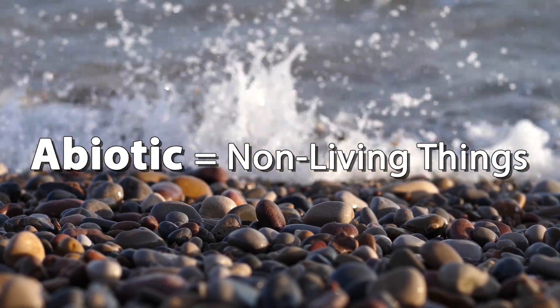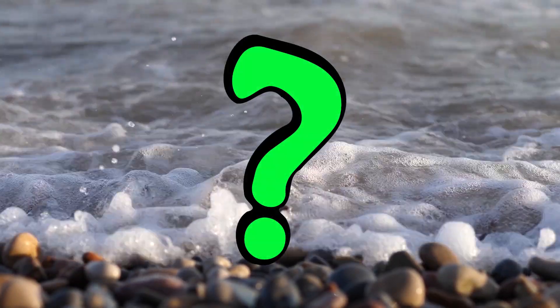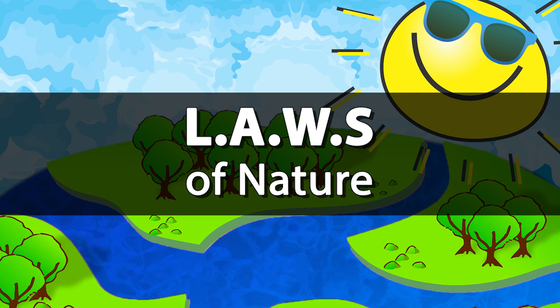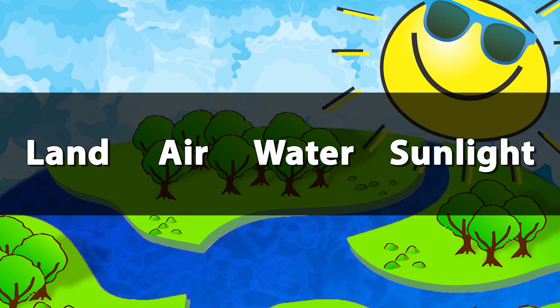Non-living things are called abiotic. What else can we call them? The laws — land, air, water, and sunlight.